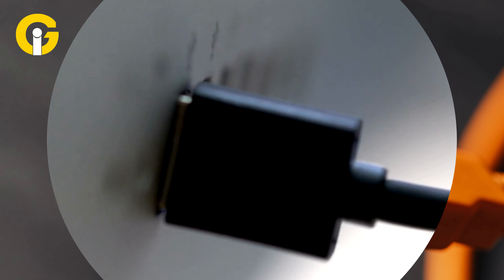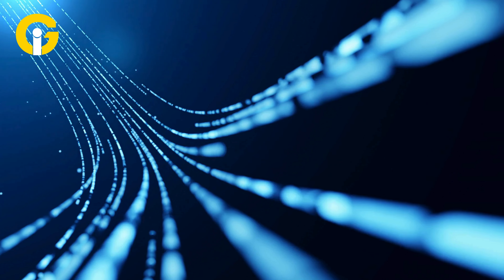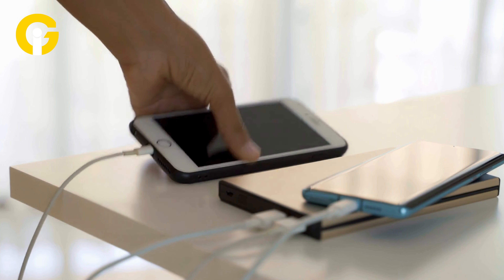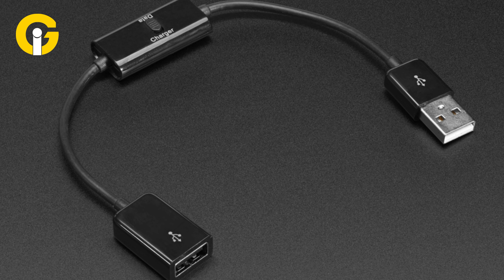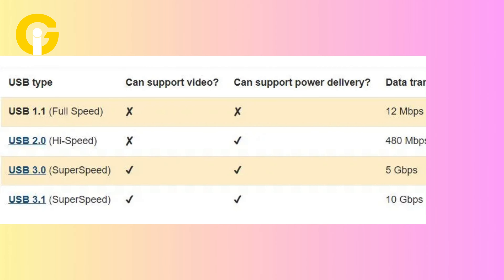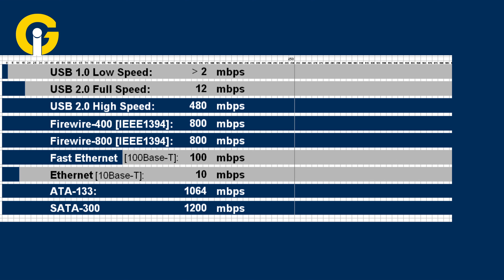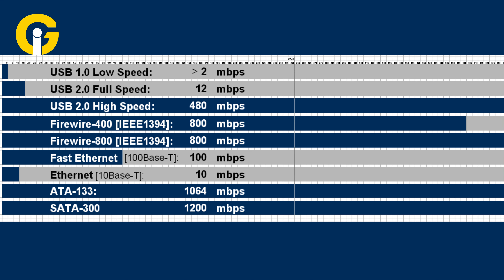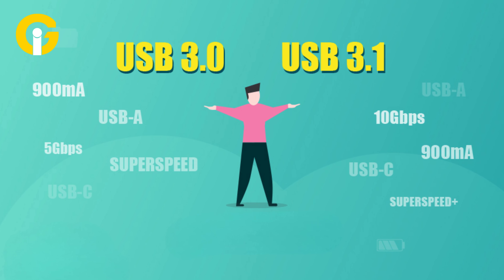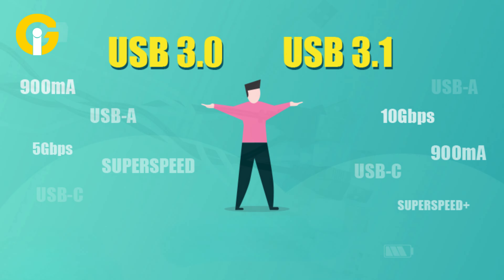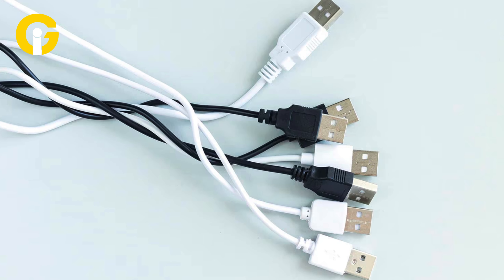However, USB-A can also support data transfer and charging functions with compatible devices and cables. USB-A can support various versions of USB standards, such as USB 1.0 and 1.1 which offer data transfer speeds up to 12 Mbps, USB 2.0 which offers data transfer speeds up to 480 Mbps, and USB 3.0 and higher which offer data transfer speeds up to 10 Gbps with USB 3.1 Gen 2.